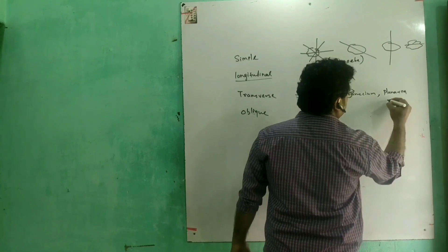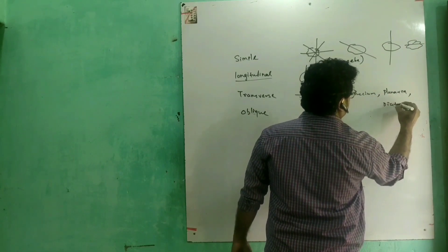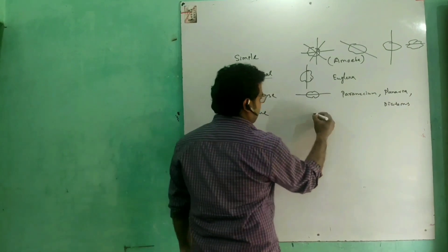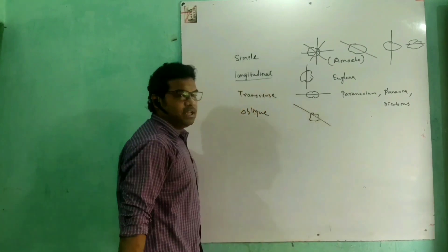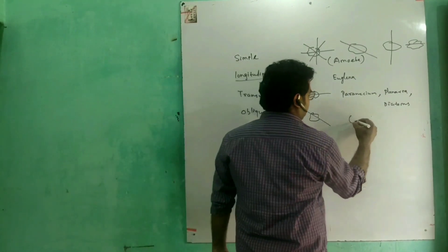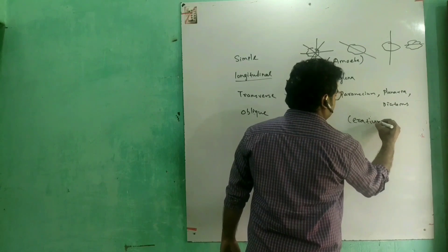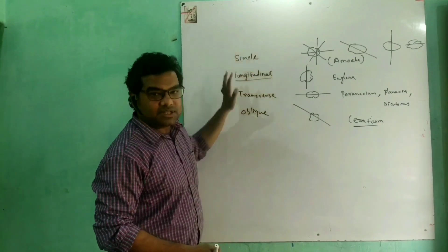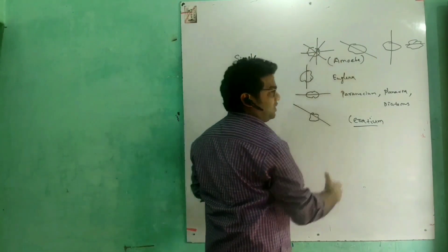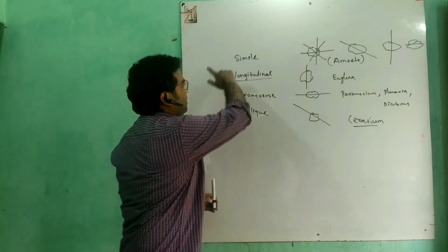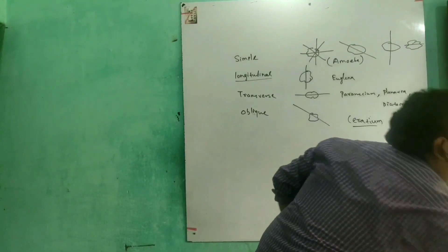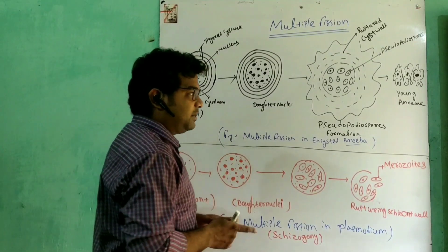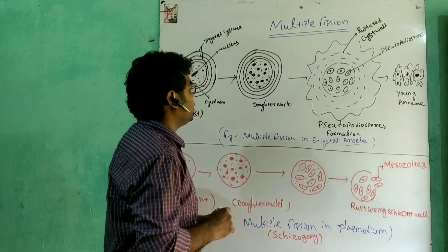Diatoms show transverse type binary fission. We have now covered the types of binary fission based on the plane of division: simple, longitudinal, transverse, and oblique. Let's take a look at the diagram for these types of binary fission.